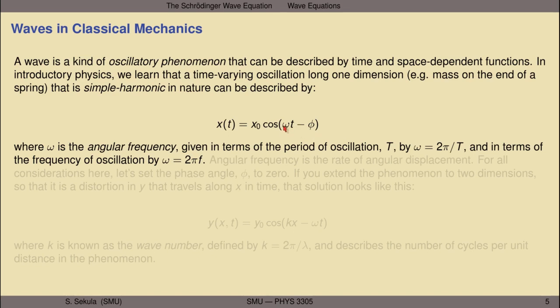Omega is a special kind of frequency known as the angular frequency, given in terms of the period of oscillation. The period of oscillation, often denoted by capital T, is simply the time required for one cycle of the phenomenon to conclude. The angular frequency is 2π divided by the period, which means it's 2π times the frequency of oscillation. Angular frequency is the rate of angular displacement — if we model the repetitive behavior as going around a circle, completing one cycle, 2π radians, as completing one cycle of the phenomenon.